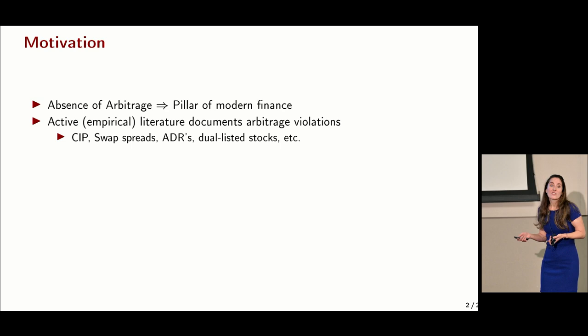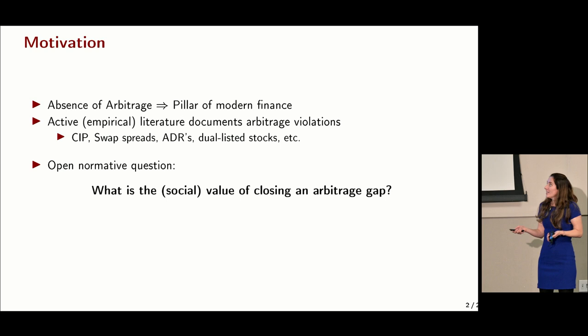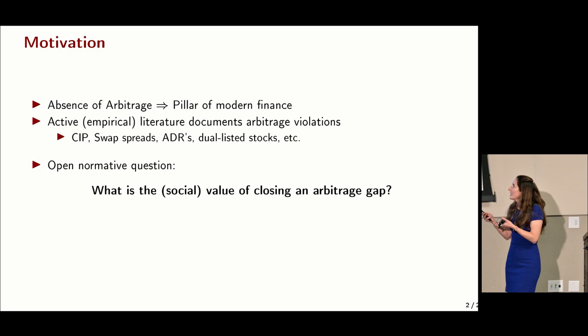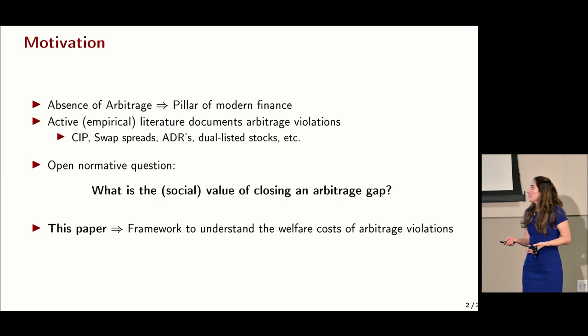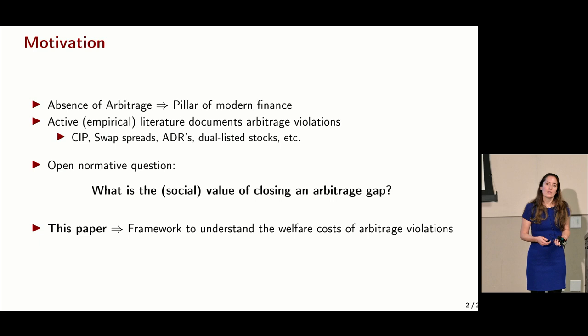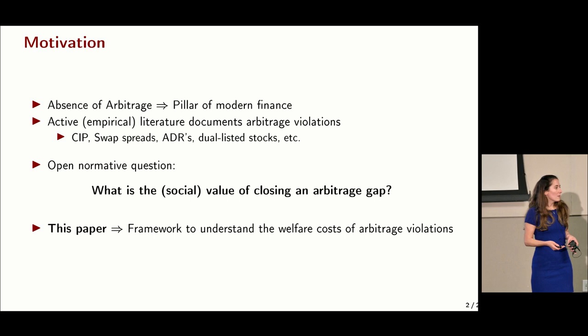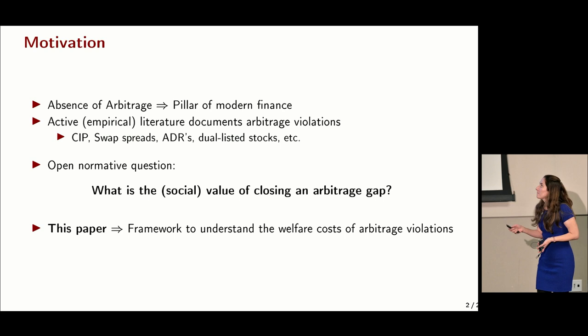When you think about this, there's a normative open question: what is the social cost of having these arbitrage violations? Or equivalently, what is the social value of closing these arbitrage gaps? What we do in this paper is develop a framework to understand the welfare cost of arbitrage violations, and then apply it to two different instances: CIP and dual listed stocks.